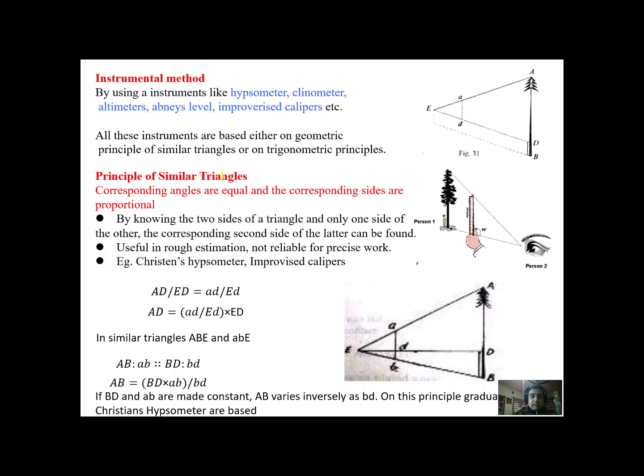Now we have instrumental methods. These instrumental methods are very important in devising the different instruments which are used for estimation of height in the trees in the forest like hypsometer, clinometer, altimeter, Abney level and improvised calipers. These are based on the principle of similar triangles.